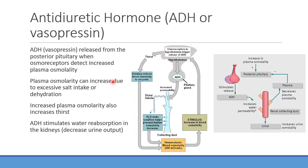If ADH release decreases — for example if the hypothalamus detects the blood is too dilute with osmolality too low — you'll see increased urine output that is more dilute. It's a balancing act: concentrating the blood means making the urine more dilute. A urinalysis measuring specific gravity can indicate how dilute or concentrated the urine is, providing clues about the patient's status.